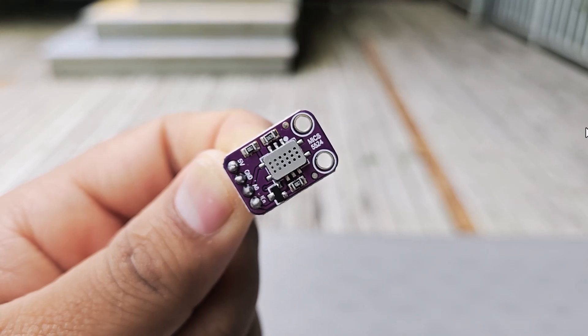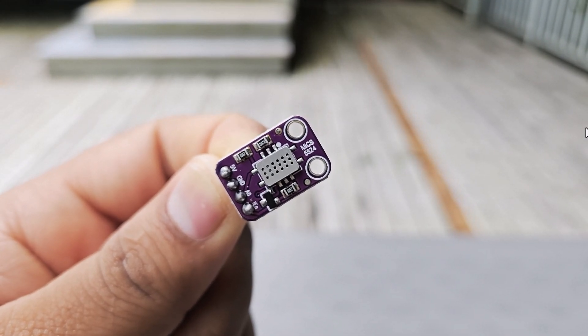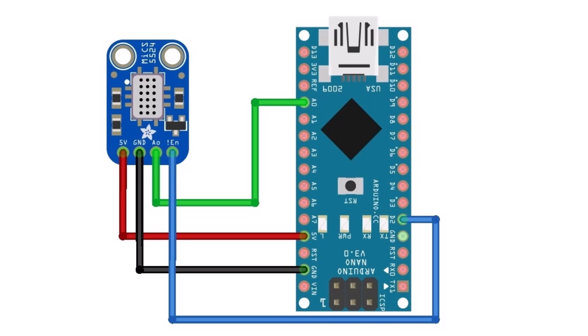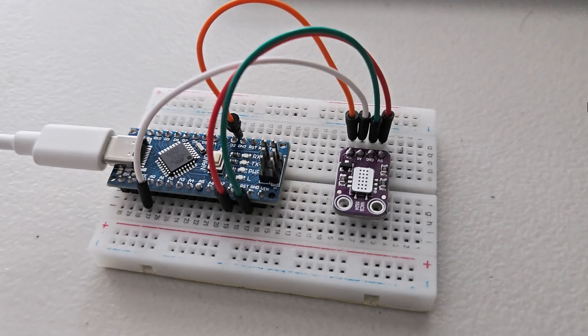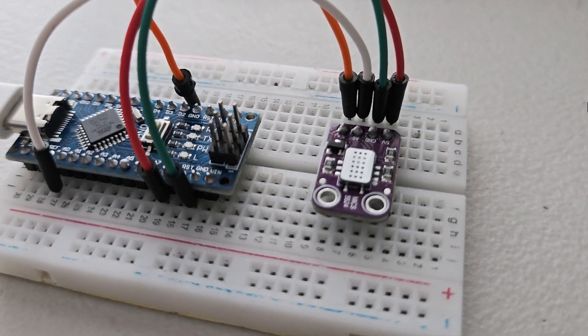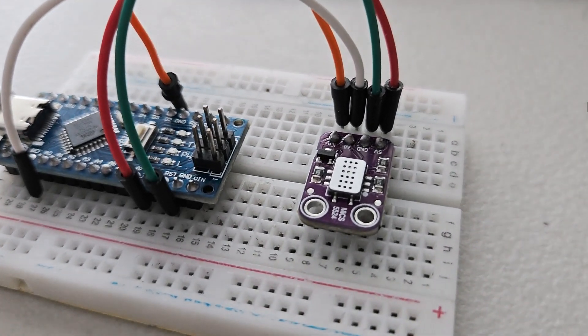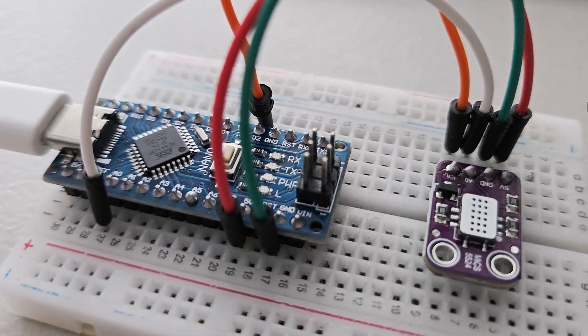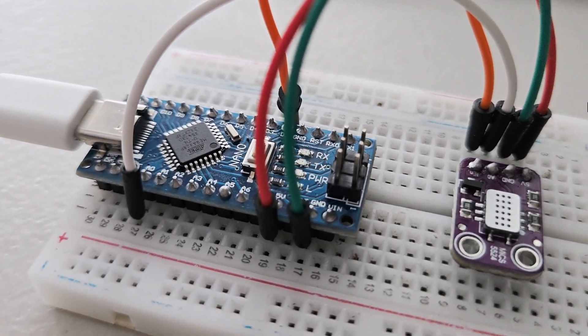Let's connect the sensor with Arduino now. I am using Arduino Nano for the demo. Here is a connection diagram. Connect the enable pin to D2 and the analog output pin to the A0 of Arduino. I used a breadboard and jumper wire for connection. I have placed the sensor on the breadboard and will be spraying gases to test over here.